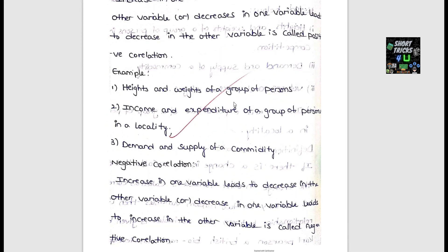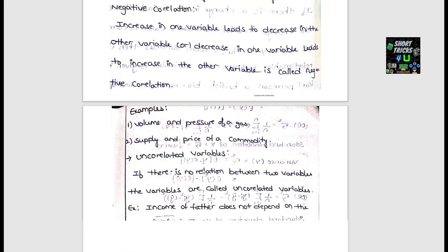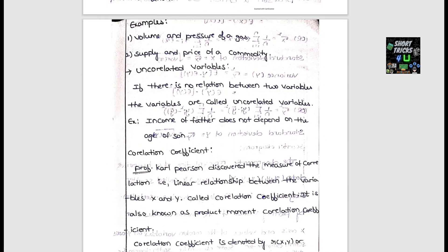Examples of correlation include heights and weights of a group of persons, and income and expenditure. These relationships are important and are discussed clearly in this video with notes.